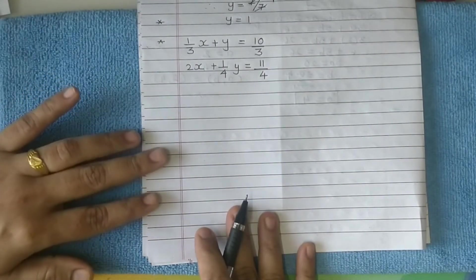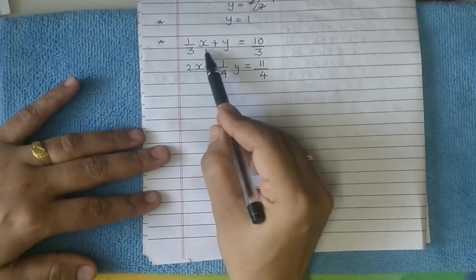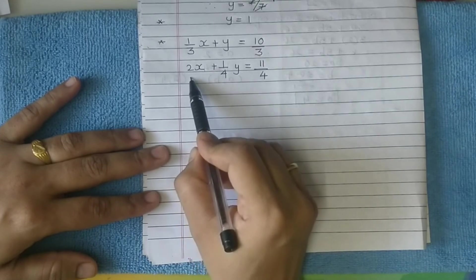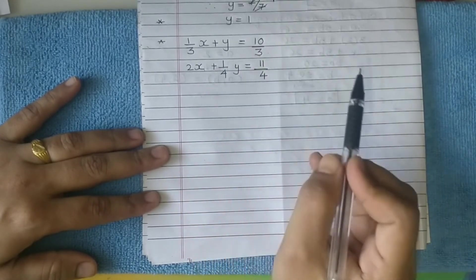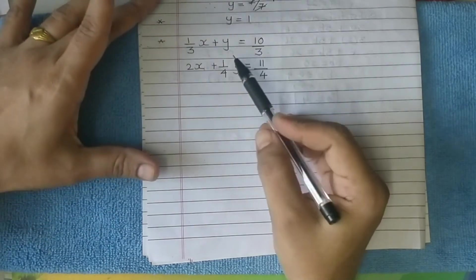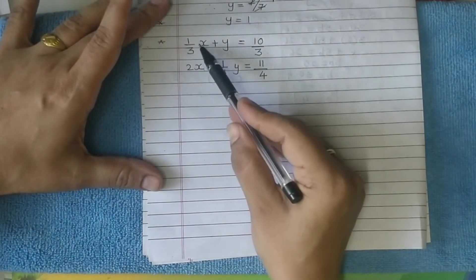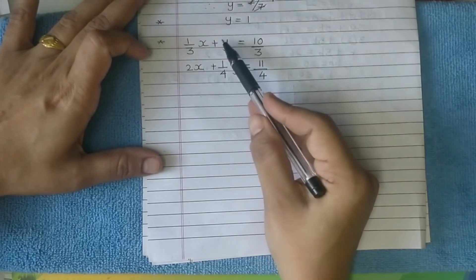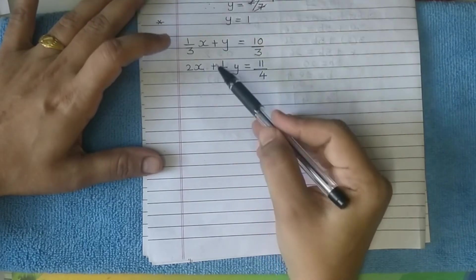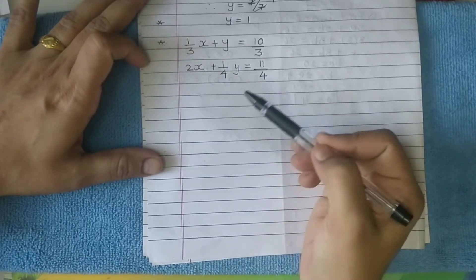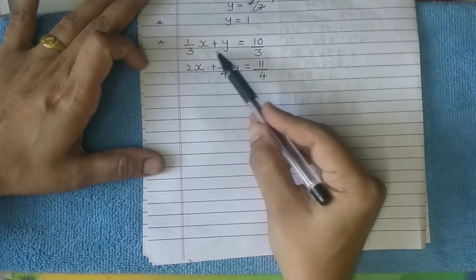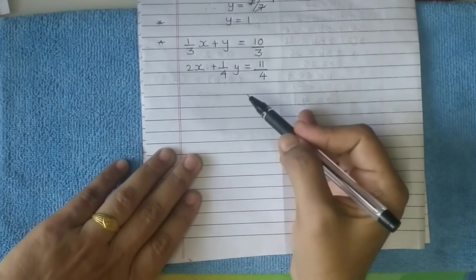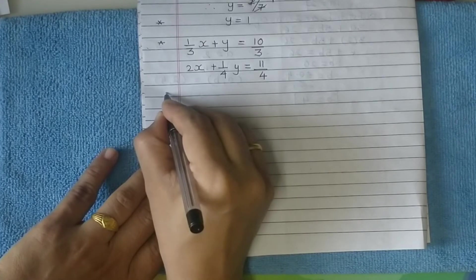Let's see one more question: 1 upon 3x plus y equals 10 upon 3, equation 1. 2x plus 1 upon 4y equals 11 upon 4, equation 2. Here also you can check the coefficient of x is 1 upon 3 and of the other equation it is 2. So you may multiply equation 1 by 2 and equation 2 by 1 upon 3, but it is advised to first simplify. Try to eliminate the fractional part so that it reduces the chances of making mistakes.